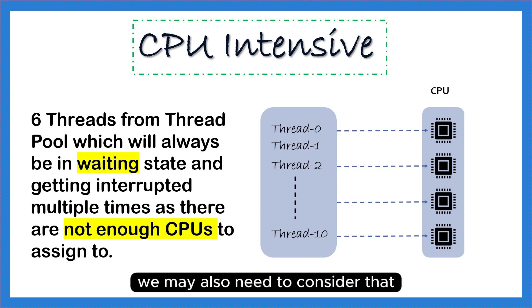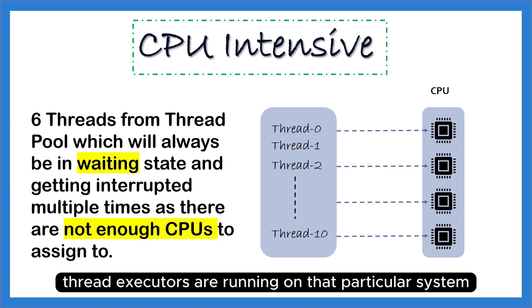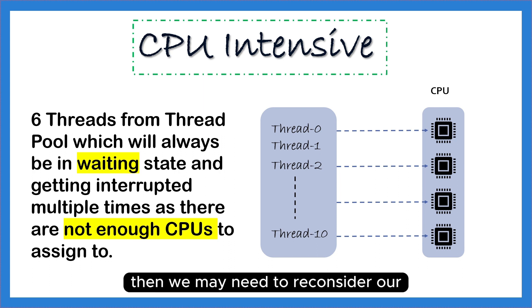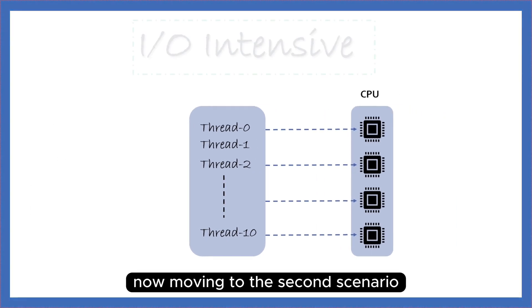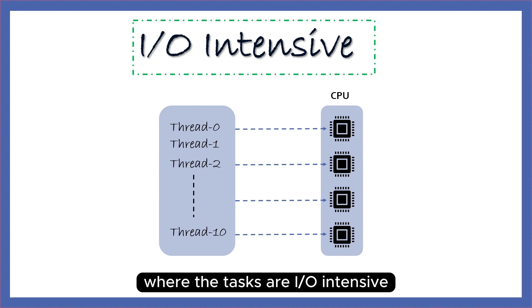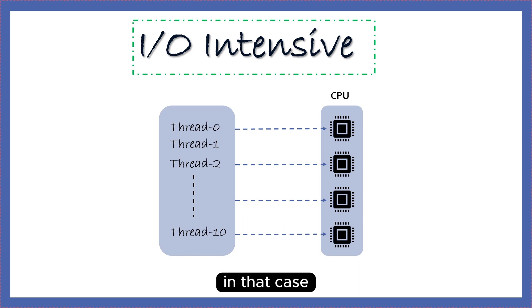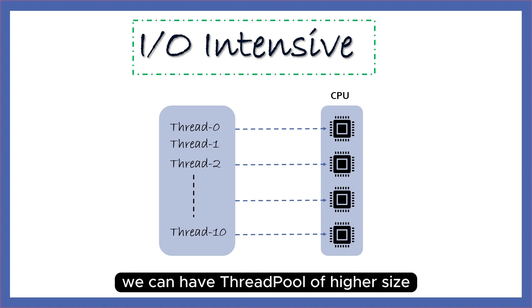In addition, we may need to consider how many other applications or thread executors are running on that system. If more such components are already present, we may need to reconsider our thread pool size to a lower value. Moving to the second scenario where tasks are IO-intensive or involve external API calls, in that case we can have a thread pool of higher size.